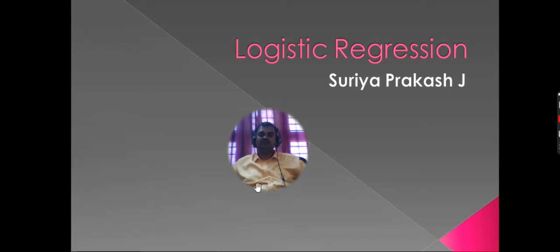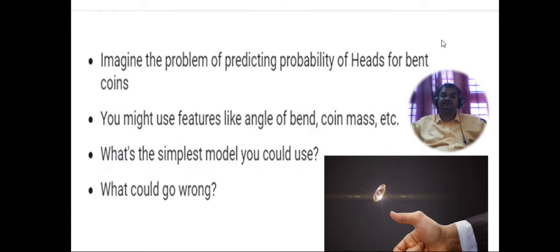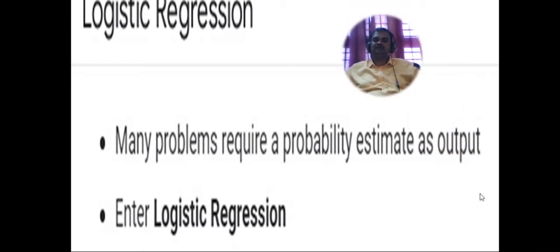Let's look at probability-based examples. When tossing a coin, the result of heads or tails depends on the mass of the coin and the angle at which the person tosses it. Logistic regression handles this prediction task and provides proper accuracy for determining whether the coin will land heads or tails.